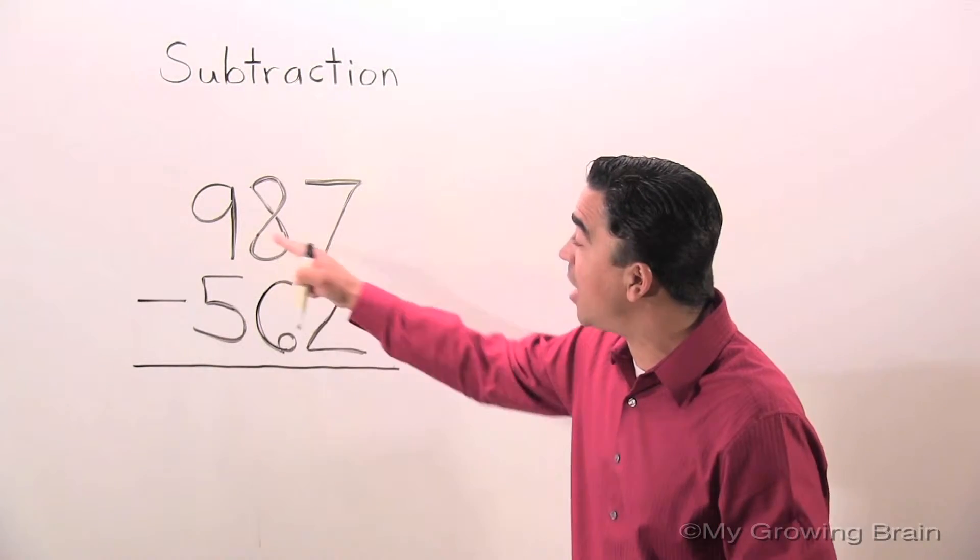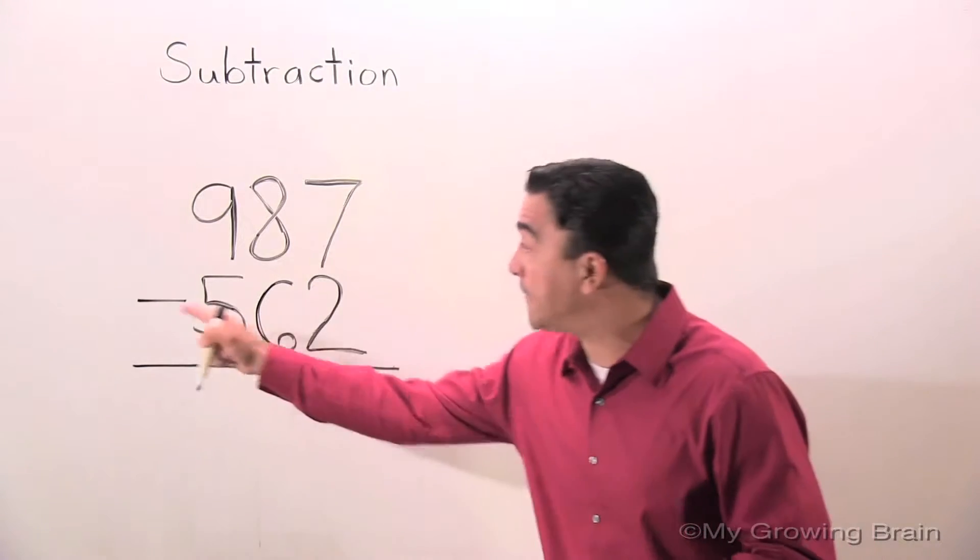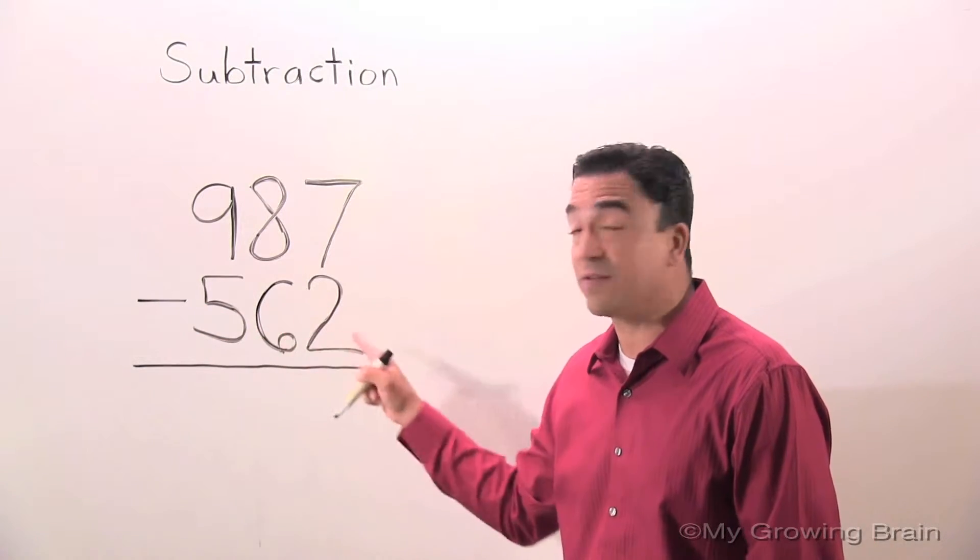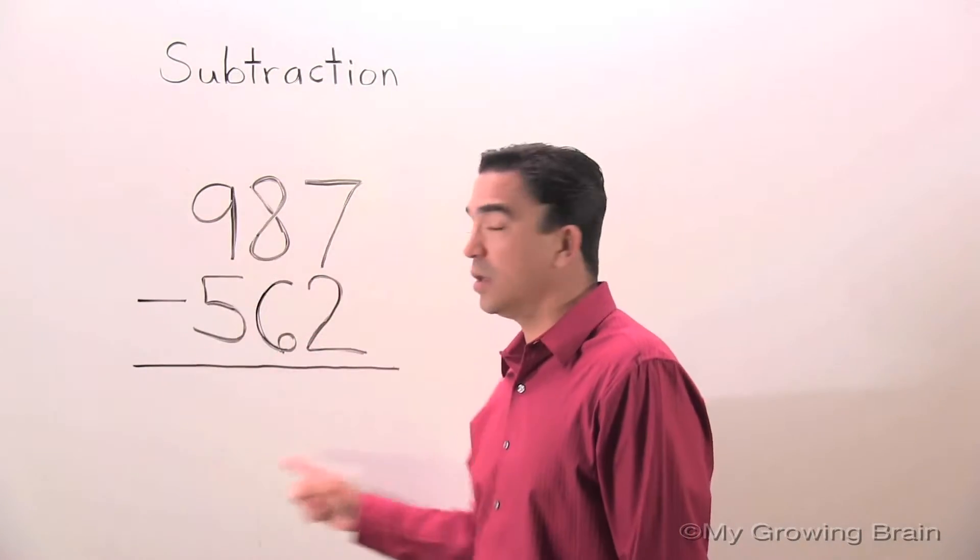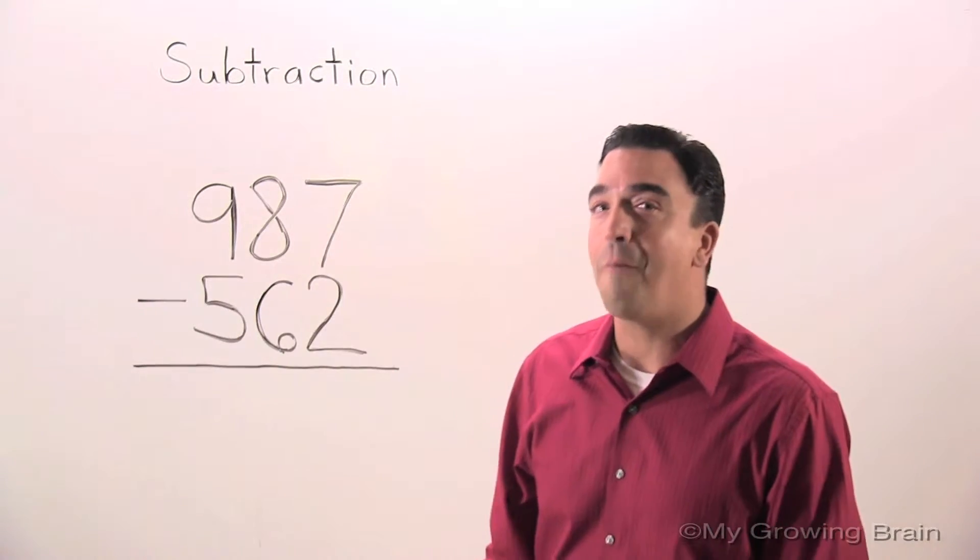Our problem is 987 minus 562. This will give us a difference. The difference is the answer to a subtraction problem.